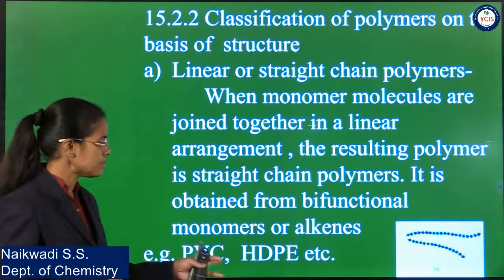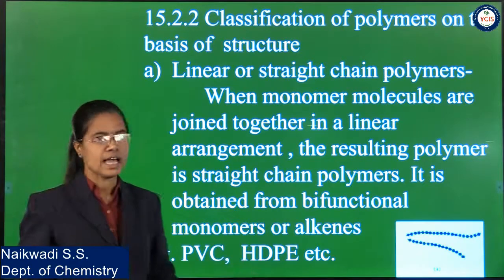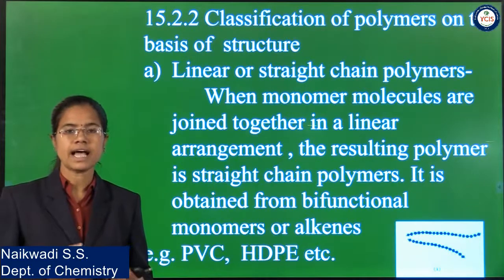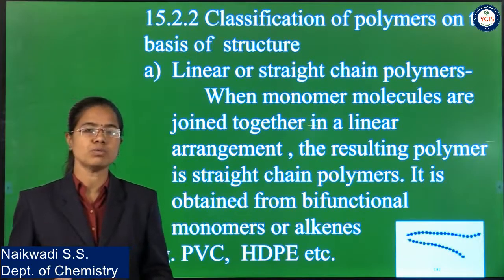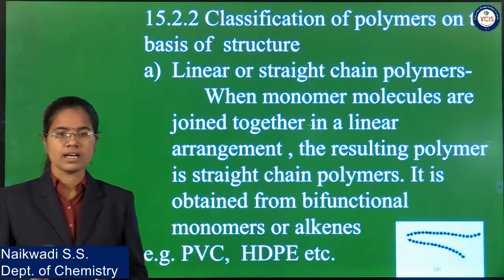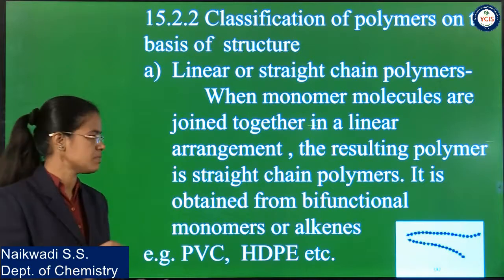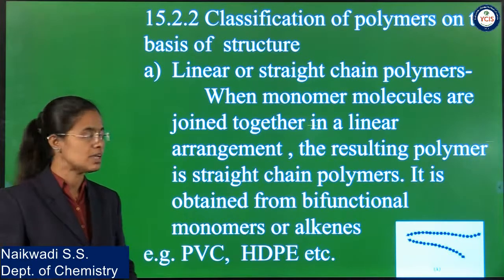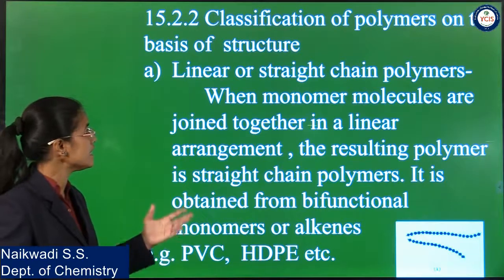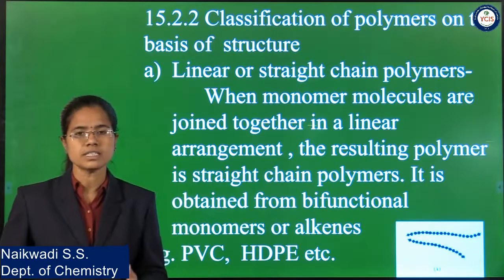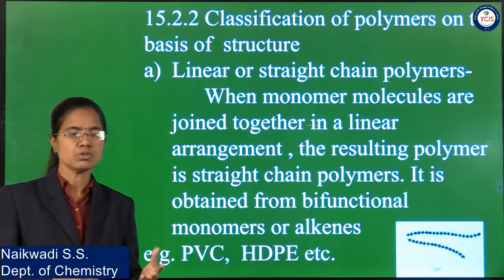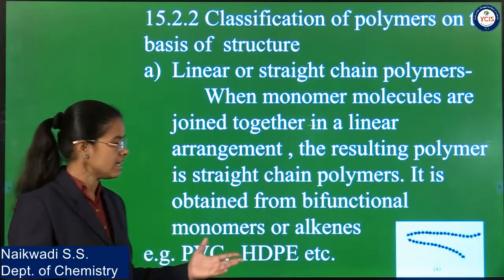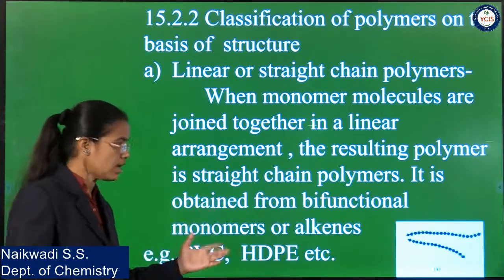Another example is HDPE — high-density polyethylene. HDPE has ethene as its monomer, which is an alkene, so its functional group is a double bond. That is why we can say that linear or straight-chain polymers generally consist of bifunctional groups and are obtained from bifunctional monomers or alkenes.